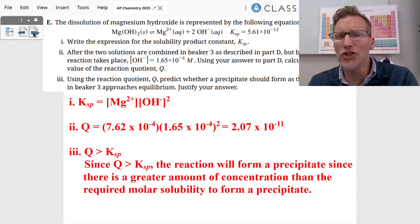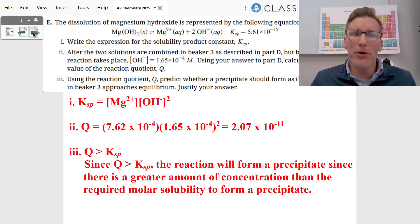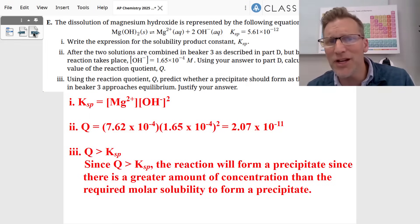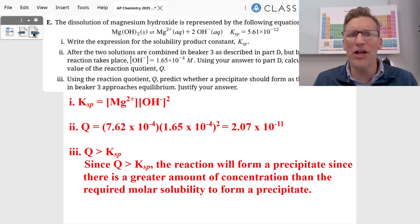They actually had us do a Q problem. So we had to find the reaction quotient, the Q, by plugging in your magnesium concentration from part D, 7.62 times 10 to negative four. You had to plug in the OH minus, which is what they gave you, 1.65 times 10 to negative four. Square that number. We get 2.07 times 10 to negative 11.